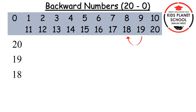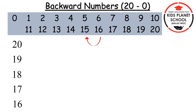Which number comes before 18? Yes, 17. So we will write 17. Which number comes before 17? Yes, 16. So we will write 16. Which number comes before 16? Yes, 15. So we will write 15. Which number comes before 15? Yes, 14. So we will write 14.